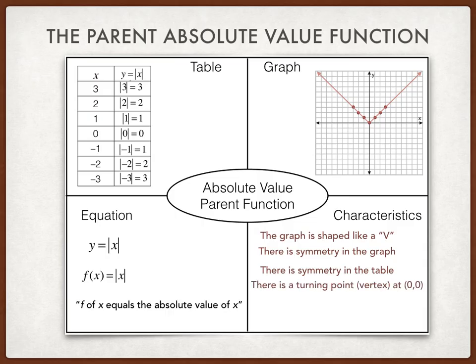And the turning point we can see in the table and in the graph, for the parent function, the vertex is at 0, 0. The y values will be non-negative, and the function has two linear pieces. We call this a piecewise function.